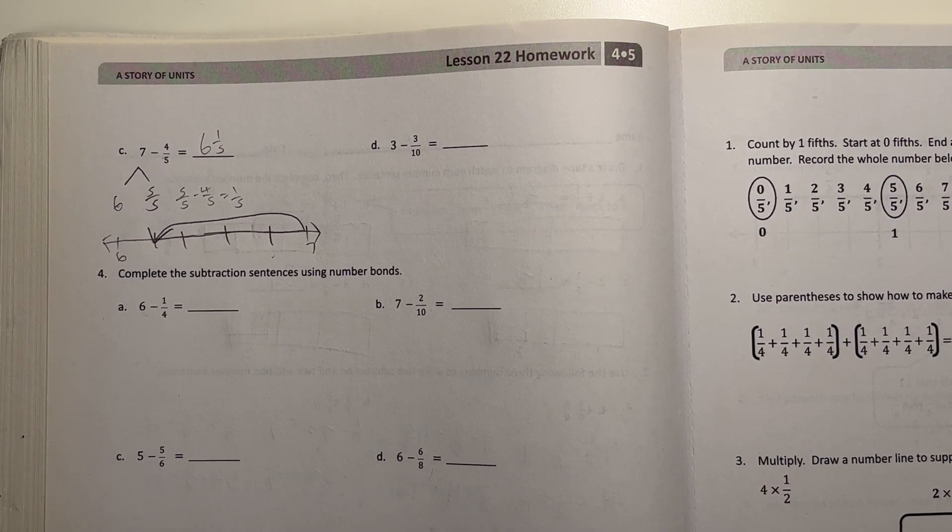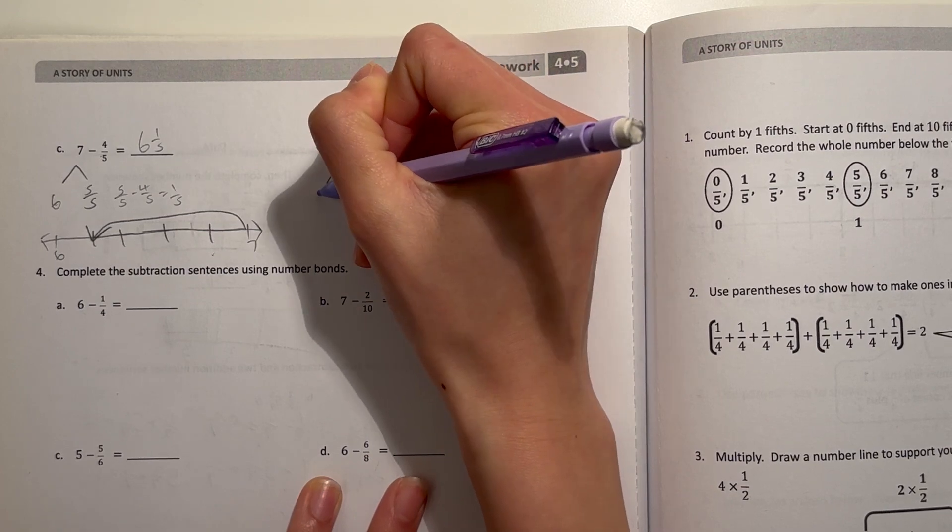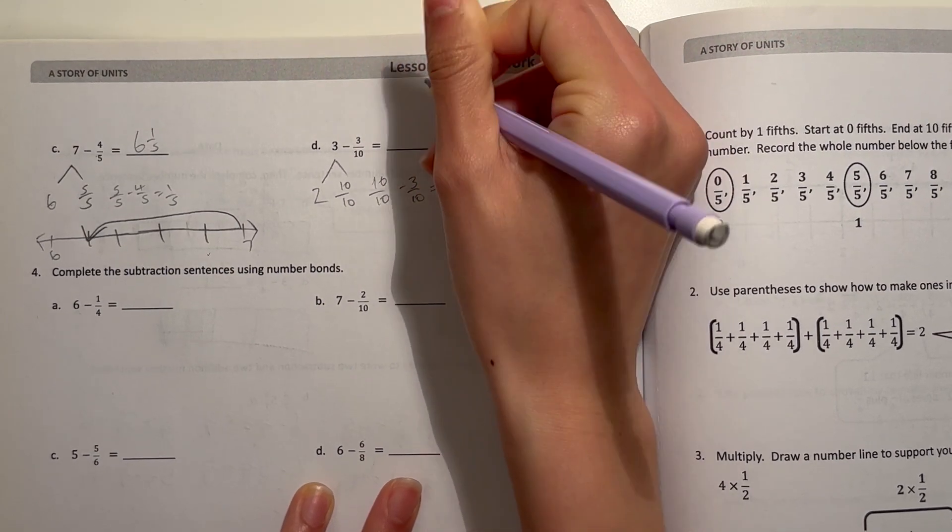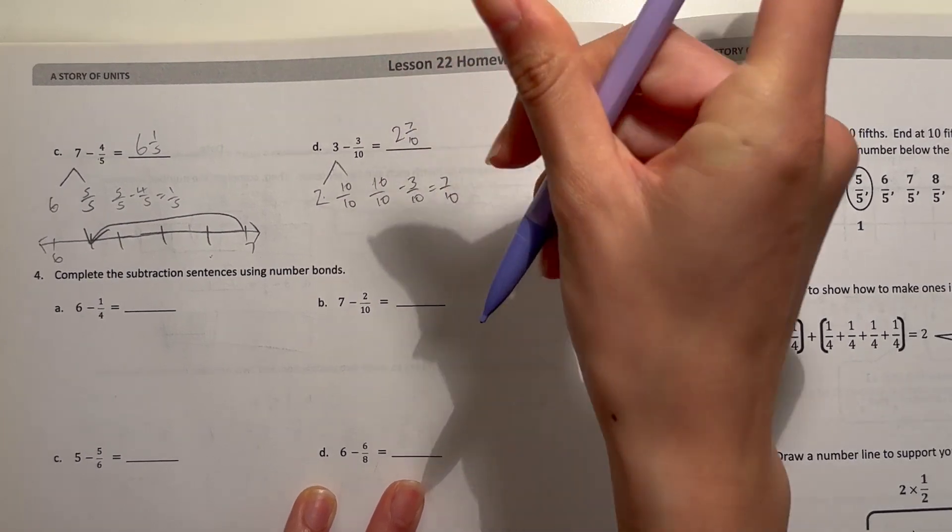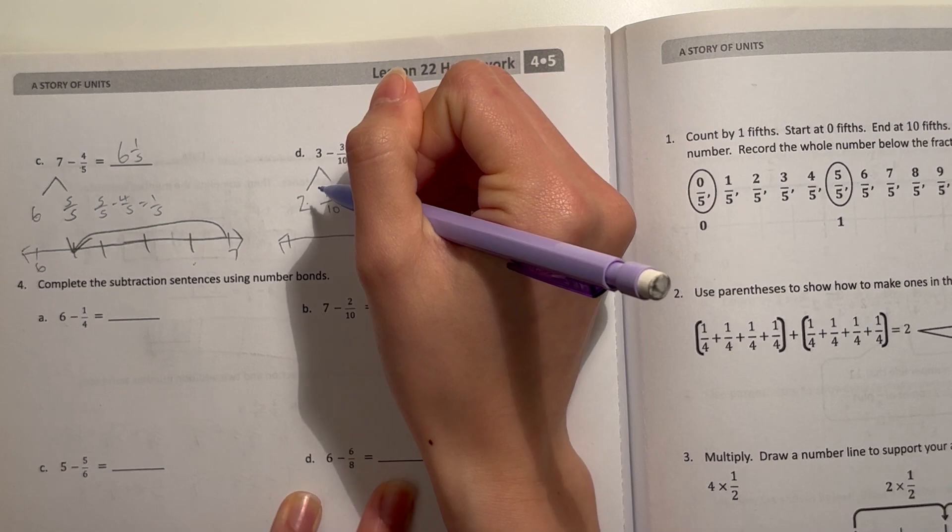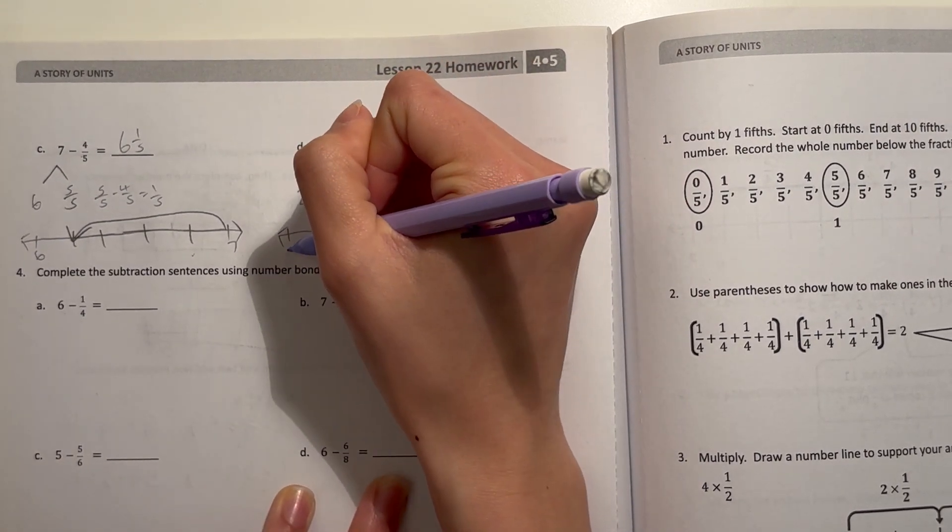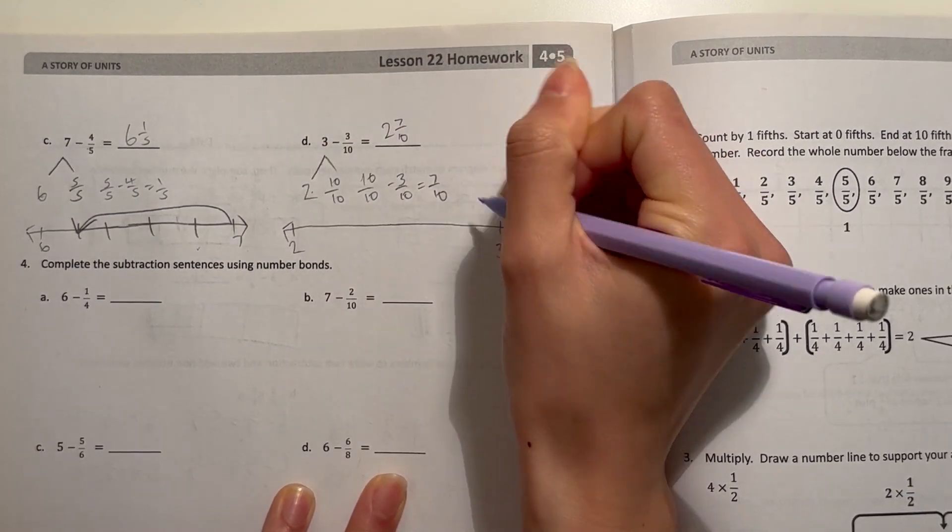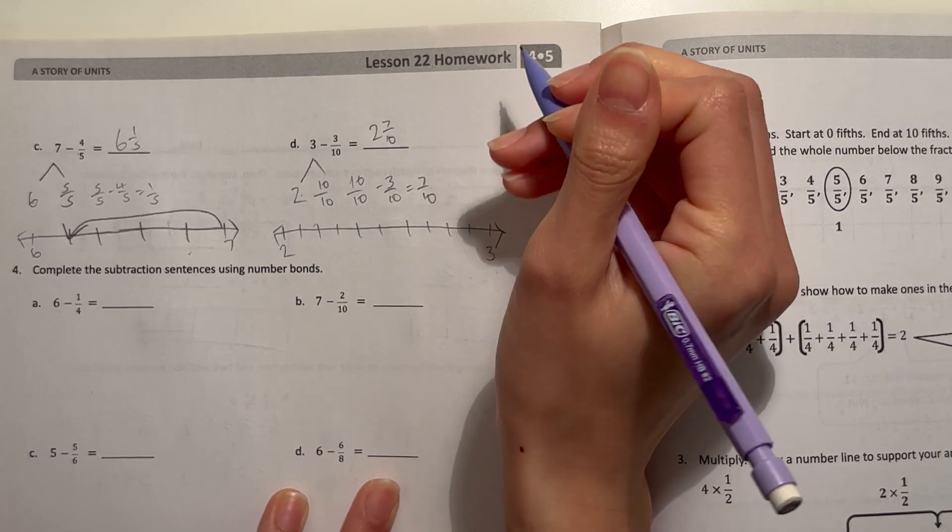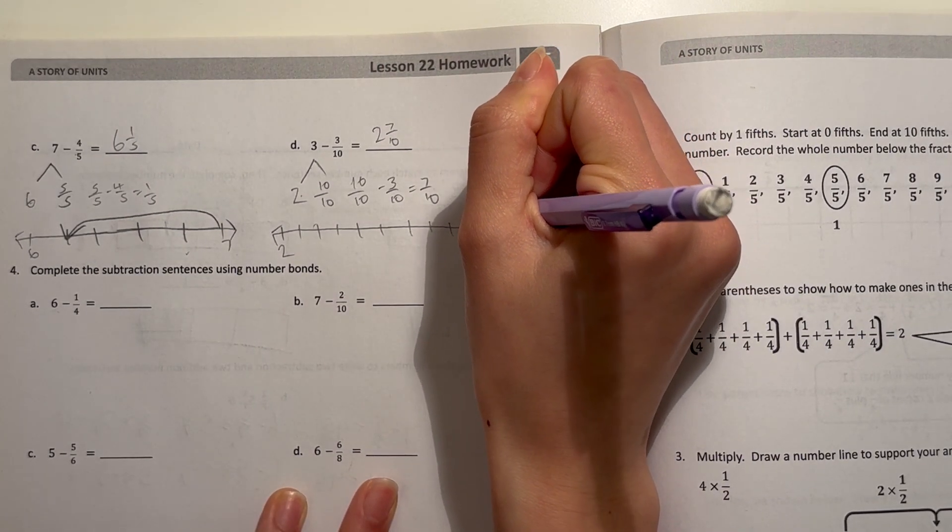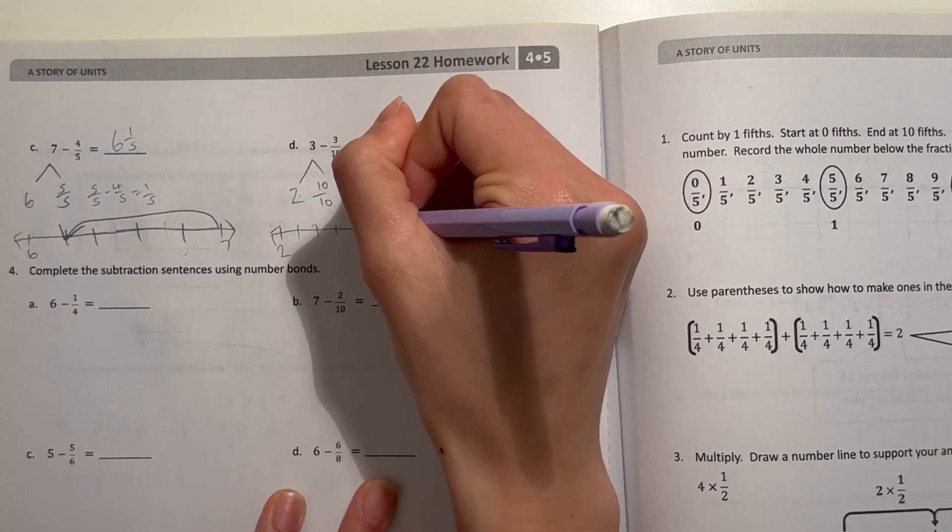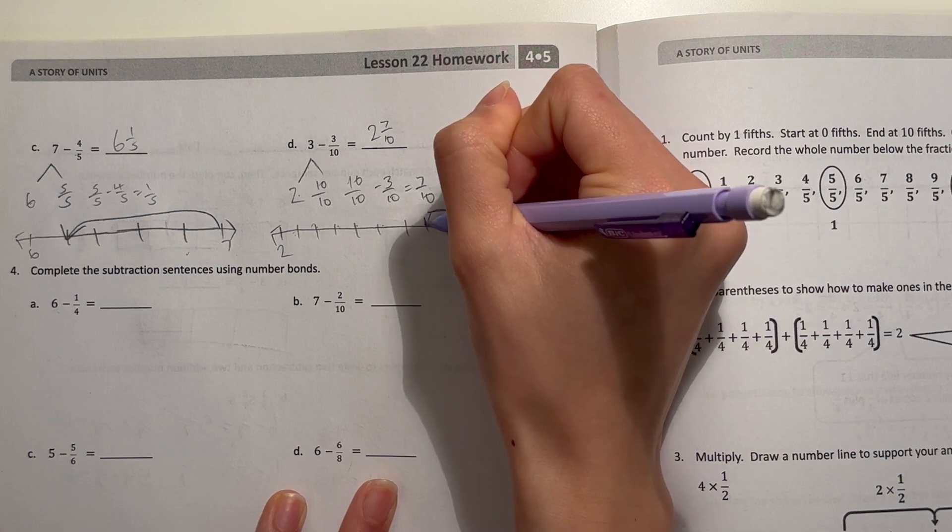Now, D, 3 minus 3 tenths. So I'm going to take out 10 tenths, and then a 2. That's 10 tenths minus 3 tenths, which is 7 tenths. Now, 2 plus 7 tenths, that's 2 and 7 tenths. All right, so here, this is 2 and this will be 3. And we'll split this into tenths. 3 minus 3 tenths. So that ends right here.